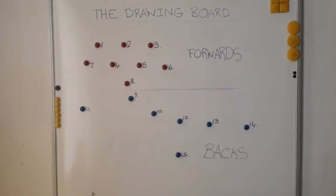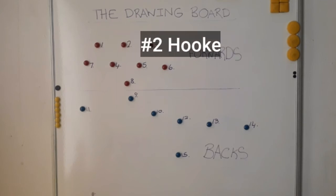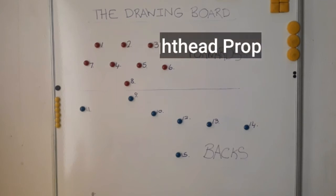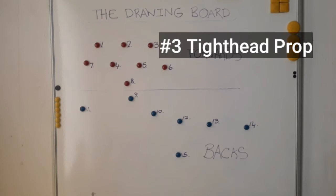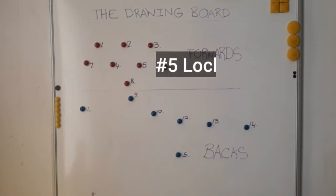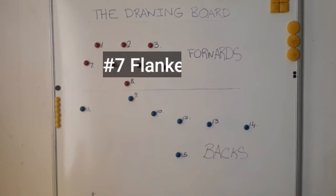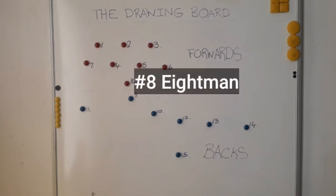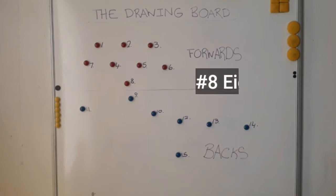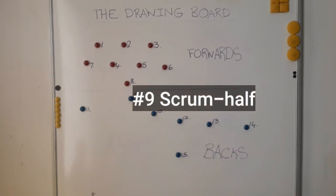Getting to the forwards: number one is the left prop, number two is the hooker, number three is the tight prop, four is the lock, five is the lock as well, six and seven are the flankers, and eight is the eighth man.